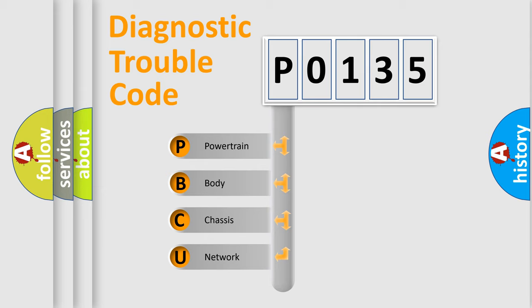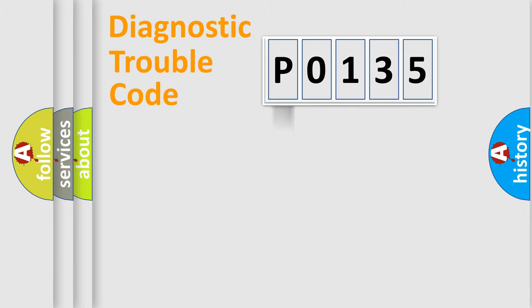We divide the electric system of automobile into four basic units: powertrain, body, chassis, network. This distribution is defined in the first character code.